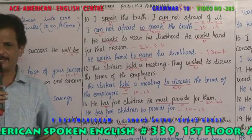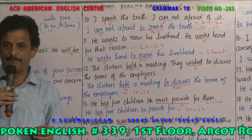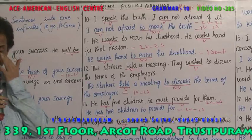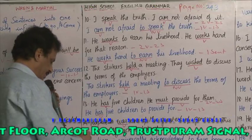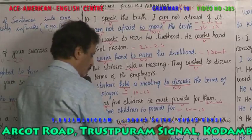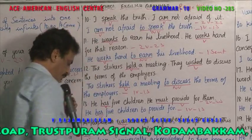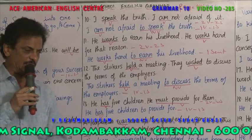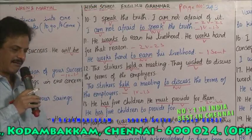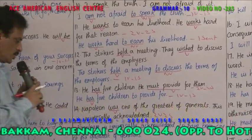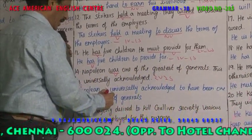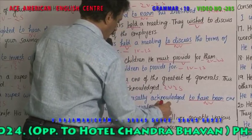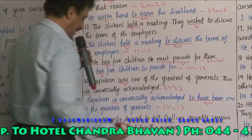Example 9: 'Napoleon was one of the greatest of generals' — 'was' is the verb. Napoleon was a French emperor. 'This is universally acknowledged' — 'is' is the verb. Two verbs, two sentences. Combined: 'Napoleon is universally acknowledged to have been one of the greatest of generals.' 'To have been' is an infinitive. One verb, one sentence.